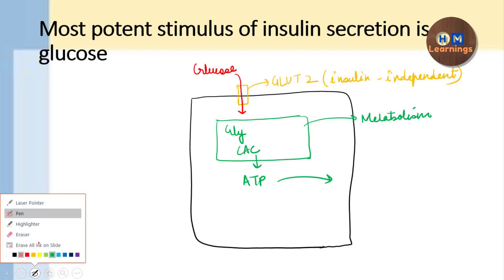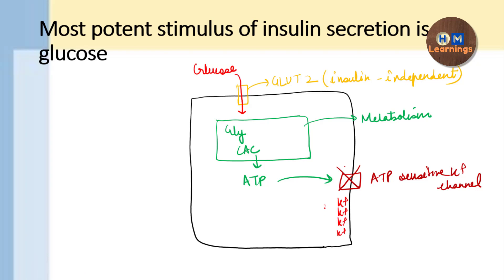Now this ATP will close the ATP-sensitive potassium channel. Now as this ATP-sensitive potassium channel is closed because of the increase in the intracellular concentration of ATP, this will lead to the potassium accumulation inside the cell. So as there is potassium accumulation inside the cell, this leads to depolarization of the cell because of the decrease in the membrane potential negativity.